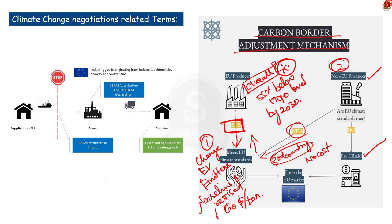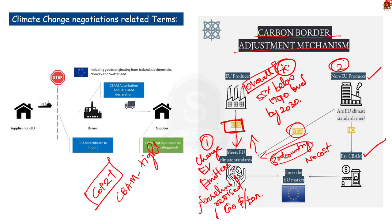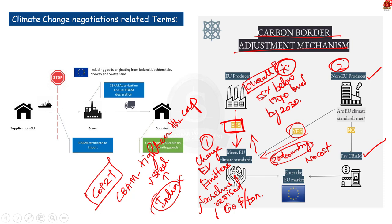During COP27, the European Union under the Carbon Border Adjustment Mechanism proposed to tighten the cap further, gradually eliminating free allowances provided to industries subject to trade competition like steel. Since India exports a lot of steel, it is now mandated to produce steel in a greener manner. If India does not do that, nobody in the European Union will buy Indian steel because of its high cost due to CBAM. So India opposed it during COP27 itself.